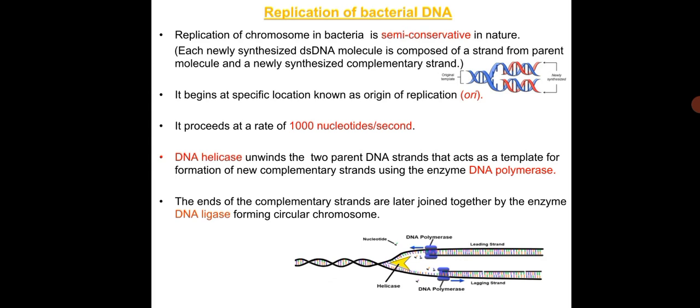The process of replication of the bacterial chromosome is semi-conservative in nature — each newly synthesized double-stranded DNA molecule is composed of a parent strand and a newly synthesized complementary strand. Replication begins at a specific location known as the origin of replication and proceeds at the rate of 1000 nucleotides per second.